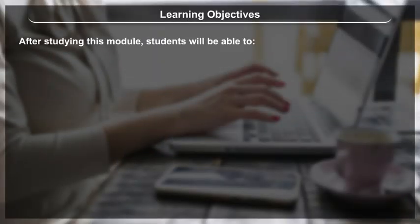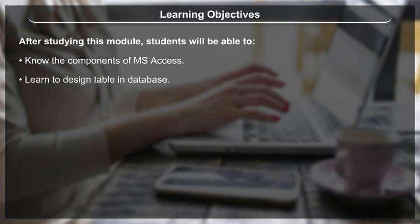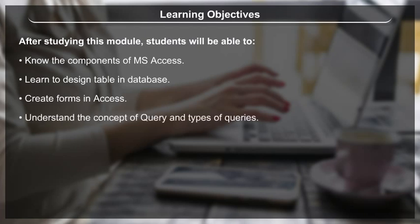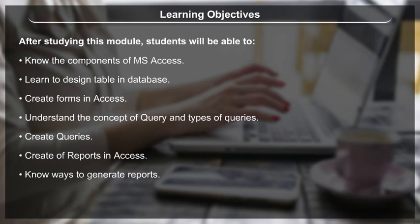Learning Objectives: After studying this module, students will be able to know the components of MS Access, learn to design tables in a database, create forms in Access, understand the concept of queries and types of queries, create queries, create reports in Access, know ways to generate reports, and learn different ways to export reports in a database.